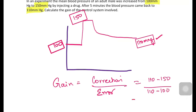So the calculation gives minus 40 divided by 10, which equals minus 4. This gain value is higher in magnitude than the previous example, which was minus 1, and you can see the remaining error is much smaller in this experiment.